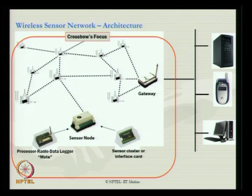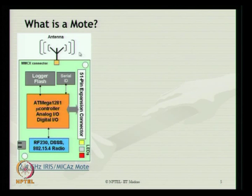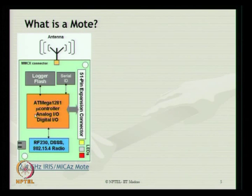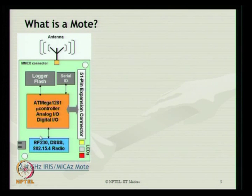This is the area of focus — what Crossbow devices offer for designer configuration. Let us understand in more detail what we mean by a mote. Mote configuration consists of an antenna with an MMCX connector, a logger flash, a serial ID, and an ATmega 1281 microcontroller. It has analog input and digital input/output, and it has RF 230 DSSS with radio frequency at IEEE 802.15.4, which can operate at 2.4 GHz IRIS. It also has a 51-pin expansion connector for further configurations and LED indications to show different kinds of signal alarms.